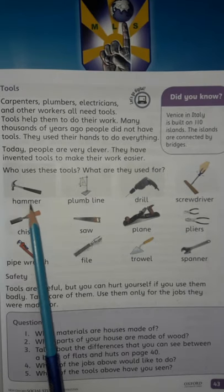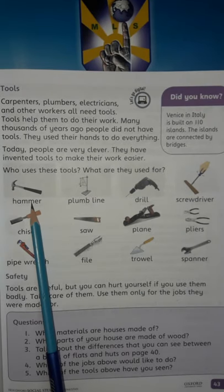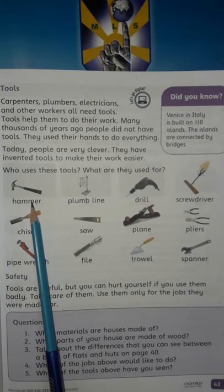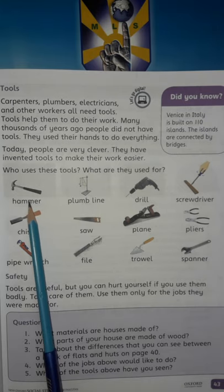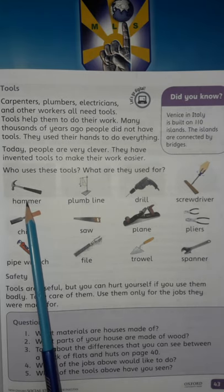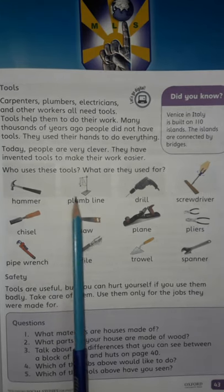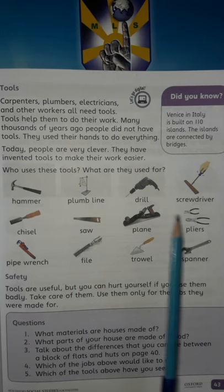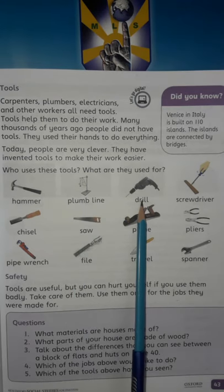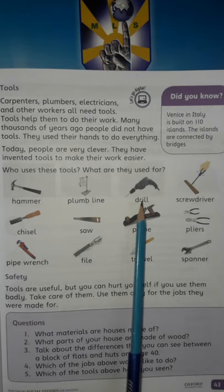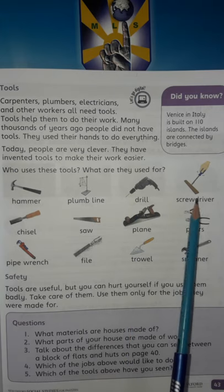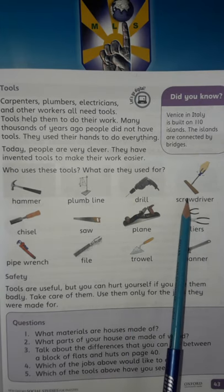Hammer: many people use a hammer; it is used to hammer a nail into a wall. Plumb line: it is used to check the level of a surface. Drill: it is used to make holes in walls.